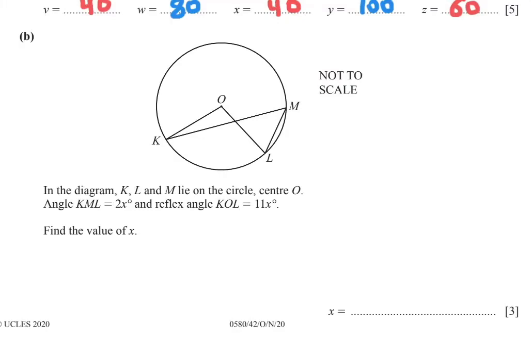Problem B. In the diagram, K, L, and M lie on the circle with center O. Angle KML equals 2X, so this angle is 2X. And reflex angle KOL equals 11X. This is the reflex angle, which equals 11X. Find the value of X.